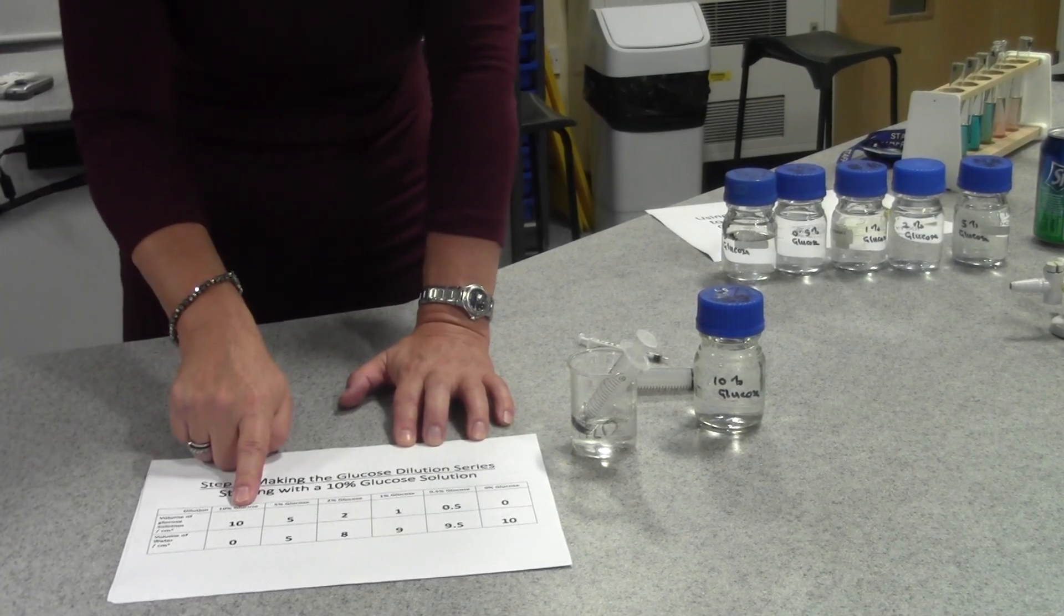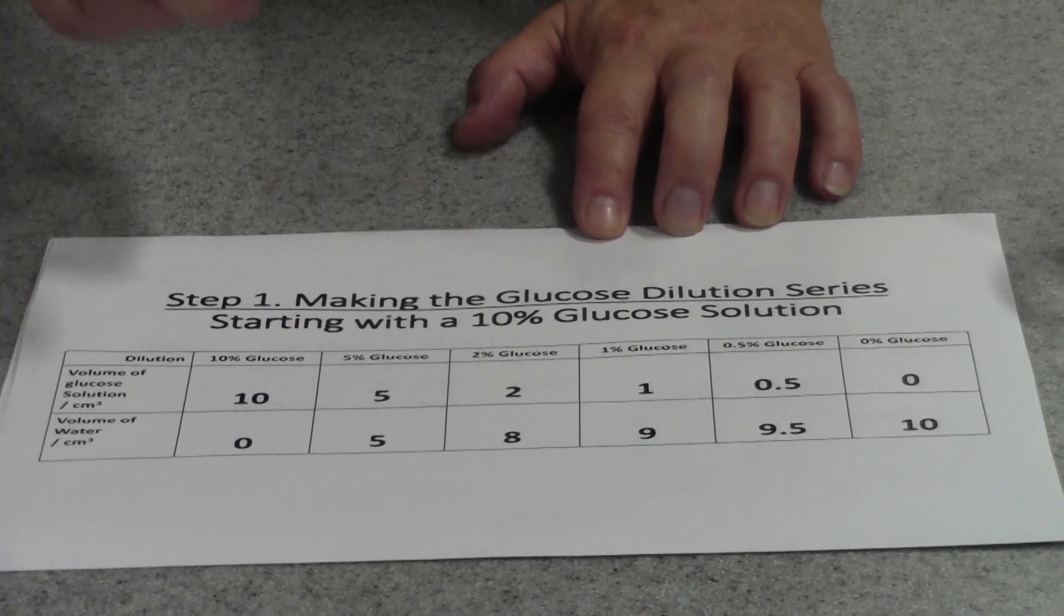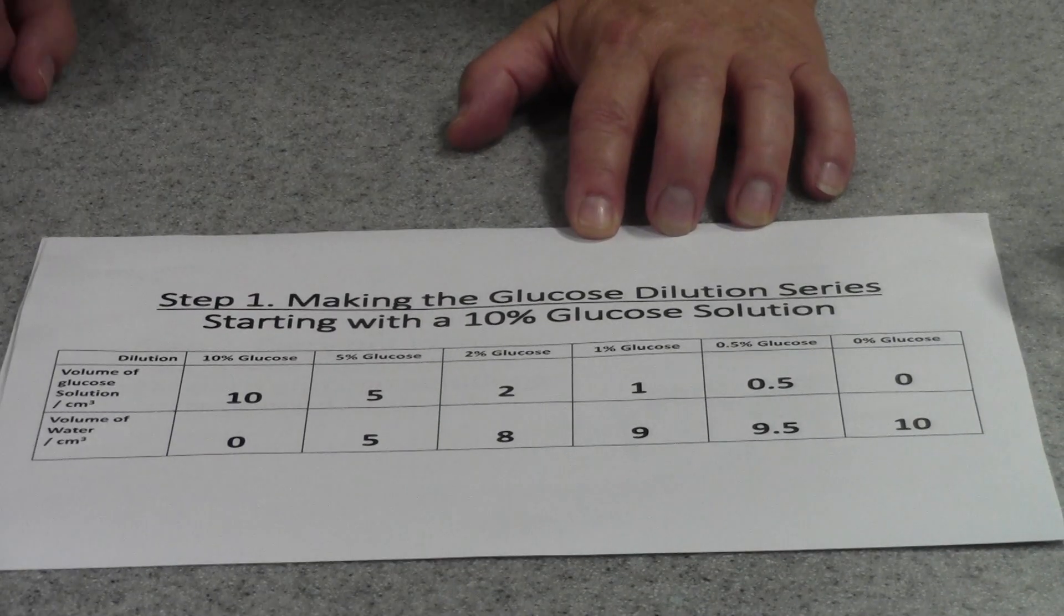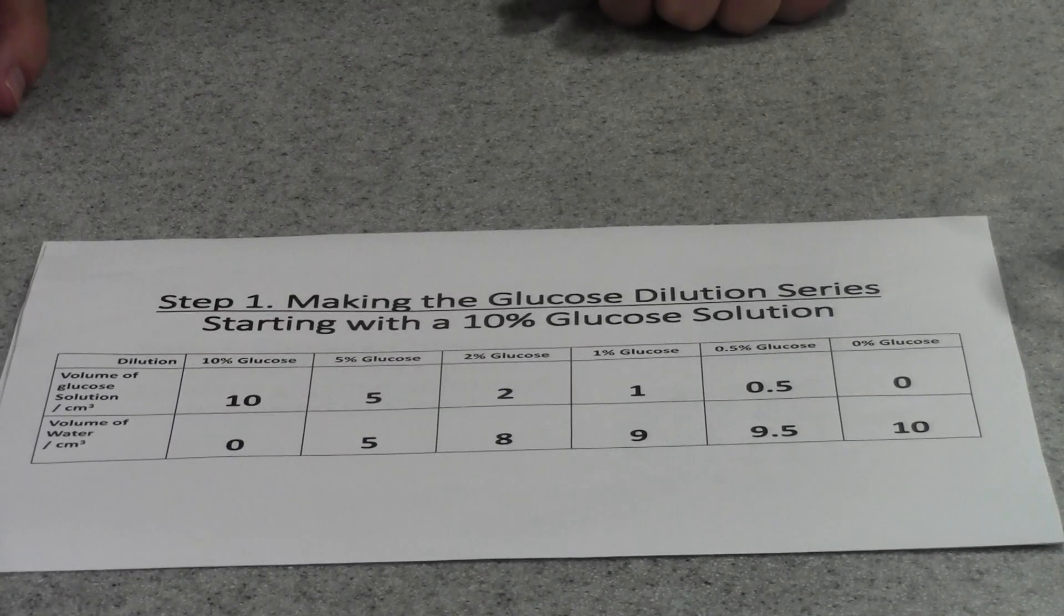For example the 10% glucose is already prepared. If we want to make a 5% glucose solution we would simply use 5 centimetres cubed of the 10% mixed with 5 centimetres cubed of distilled water.